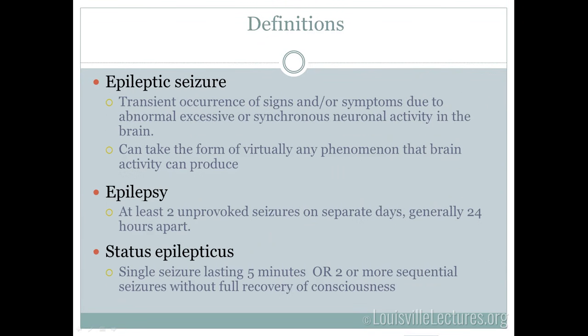A seizure occurs when there is abnormal, excessive, or synchronous brain activity — all the neurons firing at once, which is very abnormal. A seizure can be anything the brain can do. I had a patient having seizures probably from their primary auditory cortex, and they would start with a Fall Out Boy song playing in their head. Any experience, memory, or sensation stored in the brain can manifest as a seizure if that area gets activated.